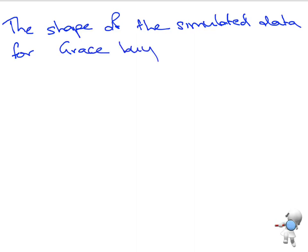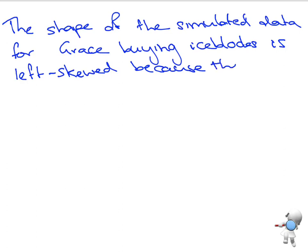Okay, so first of all, we want to talk about the shape. Now remember, we've also got to talk about the data. So when we're talking about the data, it's the number of ice blocks that they're going to buy. So we can say the shape of the simulator data for Grace buying ice blocks is left skewed, because there is a long tail on the left hand side. Okay, so there's our first point.